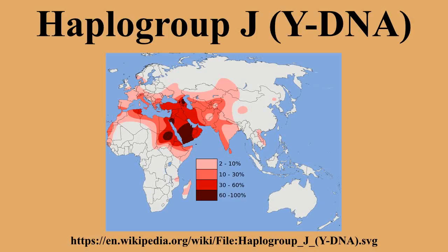Outside of the Arabian Peninsula, Haplogroup JM304 has a significant presence in North Africa and the Horn of Africa. It also has a moderate occurrence in Southern Europe, especially in Central and Southern Italy, Malta, Greece, and Albania. The JM410 subclade is mostly distributed in Anatolia, Greece, and Southern Italy. JM304 is also observed in Central Asia and South Asia, particularly in the form of its subclade JM172.